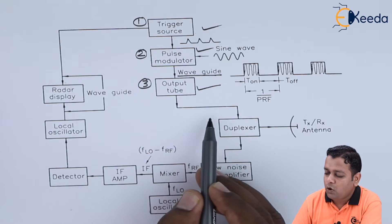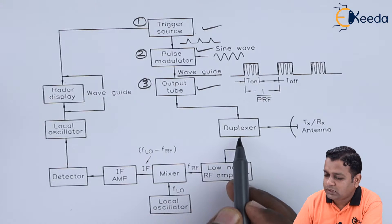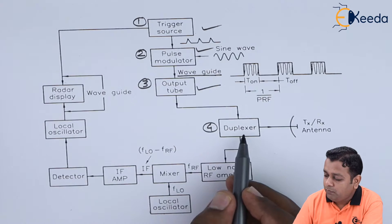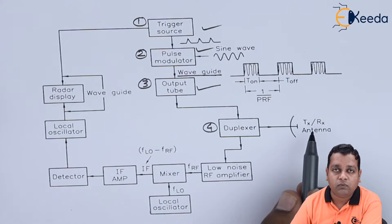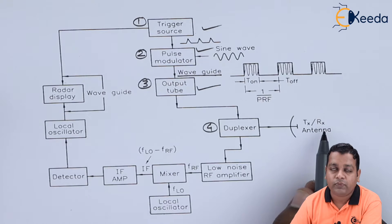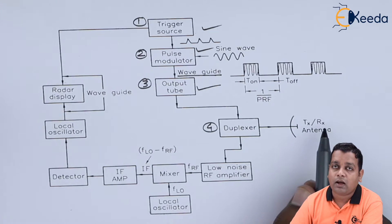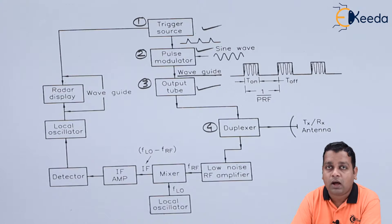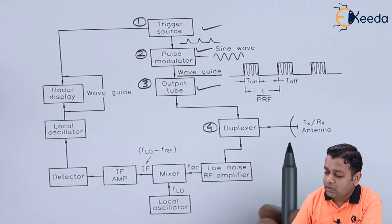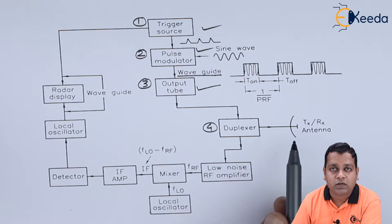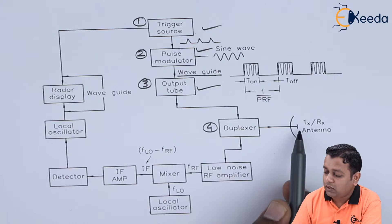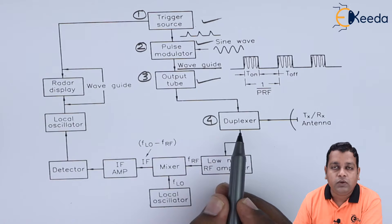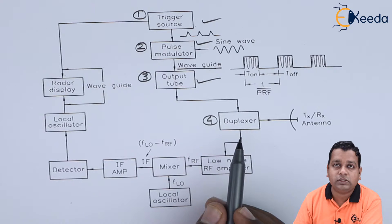This output is fed as input to the next block — the fourth block — which is the duplexer. The duplexer uses only one antenna which can work as both transmitting and receiving antenna, and both operations are isolated from each other. There are chances that the receiver section may get damaged due to the high power associated with the transmitter section, but it is the duty of the duplexer to isolate this and to save the receiver section from damage.